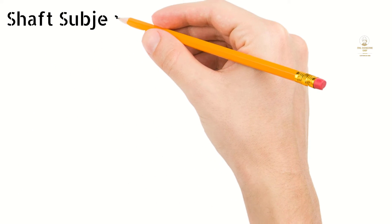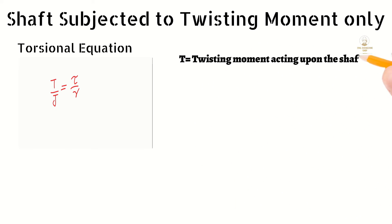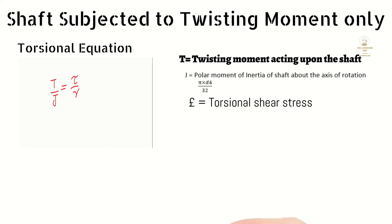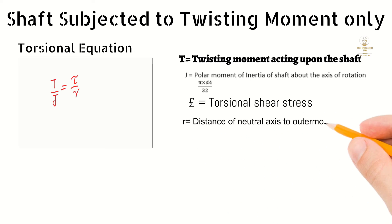Now consider when a shaft is subjected to a pure twisting moment only. We will use the torsional equation: T/J = τ/R, where T is the twisting moment acting upon the shaft, J is the polar moment of inertia of the shaft about the axis of rotation equal to πD⁴/32, τ is the torsional shear stress, and R is the distance from the neutral axis to the outermost fiber, equal to D/2 for a circular section.